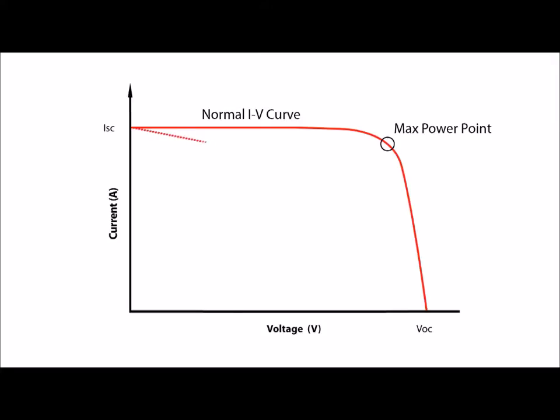For instance, the slope at the top of the curve will reveal possible shunt losses and the slope at the right side of the curve will indicate the amount of series loss. Notches in the curve indicate mismatch which can be caused by shading or other effects.